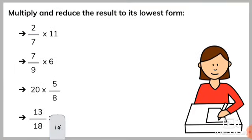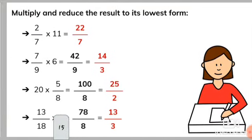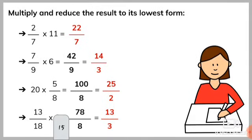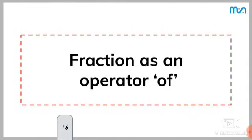Practice question one: multiply and reduce the result to its lowest form. Two by seven into eleven. Two into eleven is twenty-two, divided by seven. So the answer is twenty-two by seven.